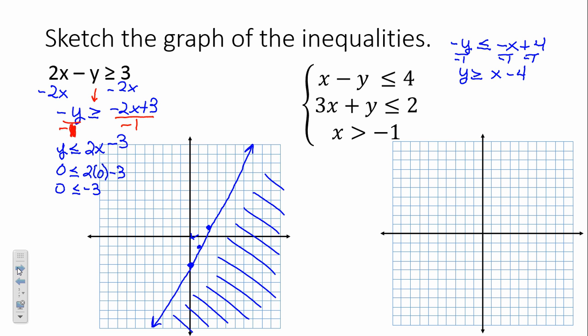Starting at negative 4 — that's my y-intercept, where I cross the y-axis. The slope here is 1 over 1: rising 1, running 1; rising 1, running 1; falling 1, left 1. Solid or dashed line? Solid. We'll worry about the shading in just a moment.